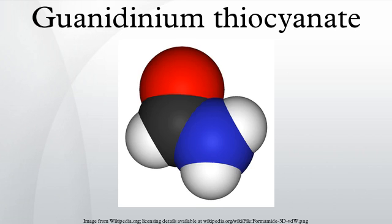This is because guanidinium is the conjugate acid of guanidine and is called the guanidinium cation, CH6N3+.